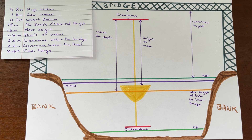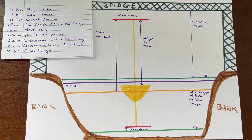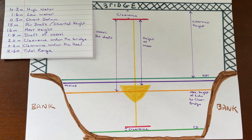Our draft is 1.8 meters with a safety cushion of 0.6 meters, so to stay afloat we need a total of 2.4 meters of water. If we take off the chart datum of 0.3 meters to work out how much tide we have, 2.4 minus 0.3 is 2.1, so we need to be going under the bridge when we have a minimum of 2.1 meters of tide. We know we need 2.2 meters to safely get under the bridge with a 2-meter space above the masthead. So we want to be under the bridge on a falling tide at 2.2 meters or on a rising tide at 2.1 meters as the perfect safety margin.